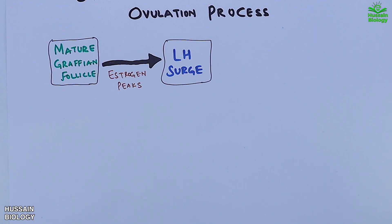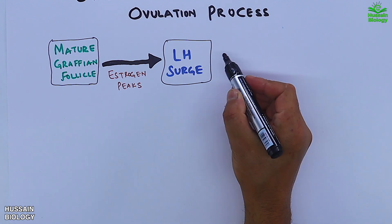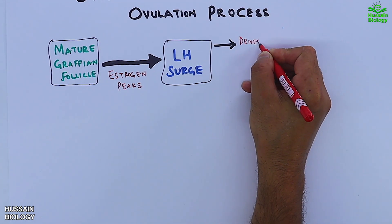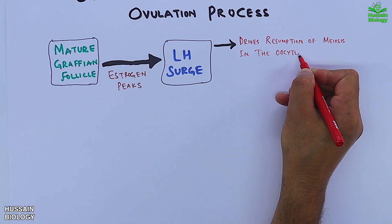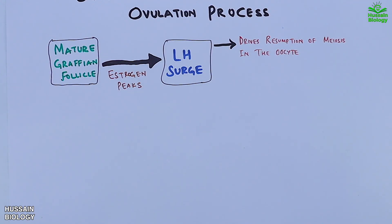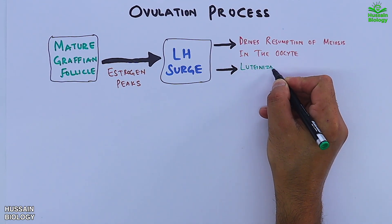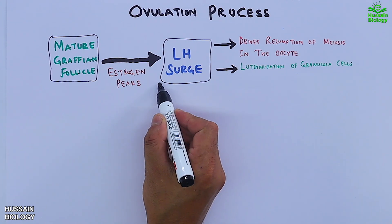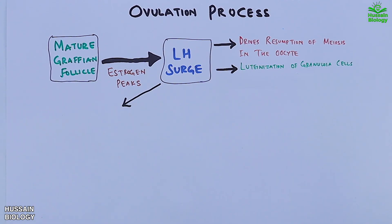The LH surge mediates different pathways and has stimulatory effects. First, it drives the resumption of meiosis in the oocyte. Second is the luteinization of granulosa cells, where we get cell enlargement and progesterone synthesis. Then the LH surge also drives the synthesis of prostaglandins like PGE2.